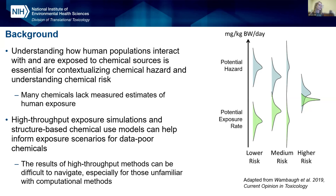The issue is that we're dealing with hundreds of thousands of chemicals all the time when doing these kinds of analyses. Many of these chemicals lack measured estimates of human exposure and lack experimental evidence — there are a lot of data gaps. We don't often know how these chemicals are used. New approach methodologies like high-throughput exposure simulations and structure-based chemical use models can help inform those exposure scenarios, but the results of these models can be very high-throughput, a lot of data, and very difficult to navigate, especially for those unfamiliar with computational methods.